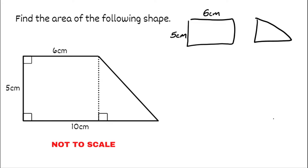Looking at this triangle, because the rectangle height was five, that length is also five, which is a shared side with the triangle. So I know the height of the triangle is five centimeters. Now for the width of the triangle: the length of the rectangle is six, so that bottom side is entirely ten centimeters, which means the base of the triangle must be four centimeters.